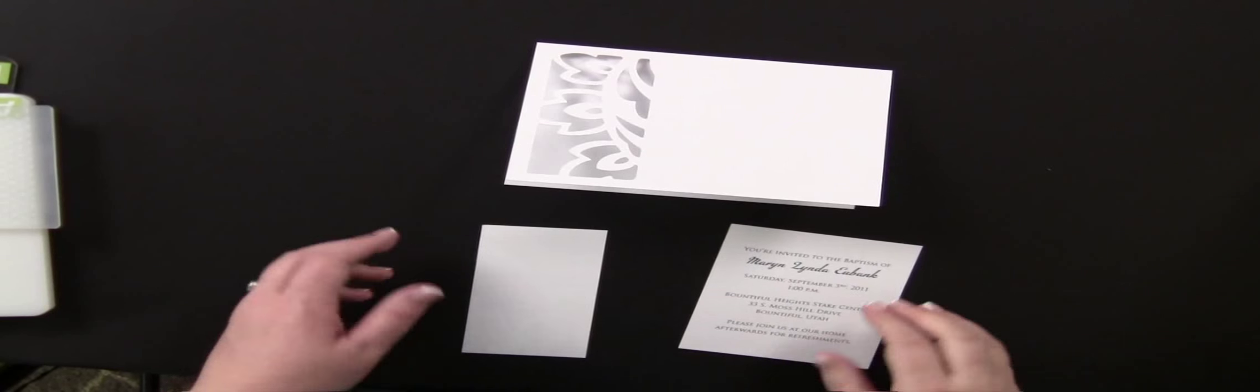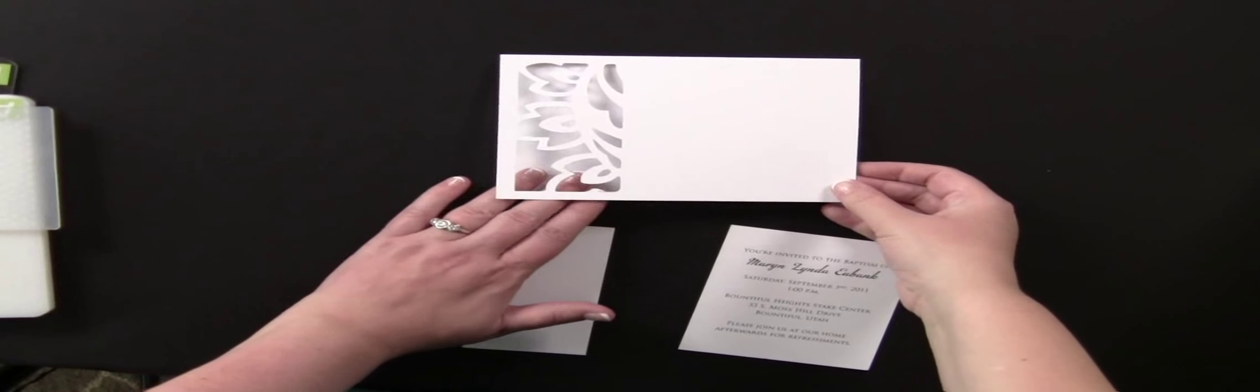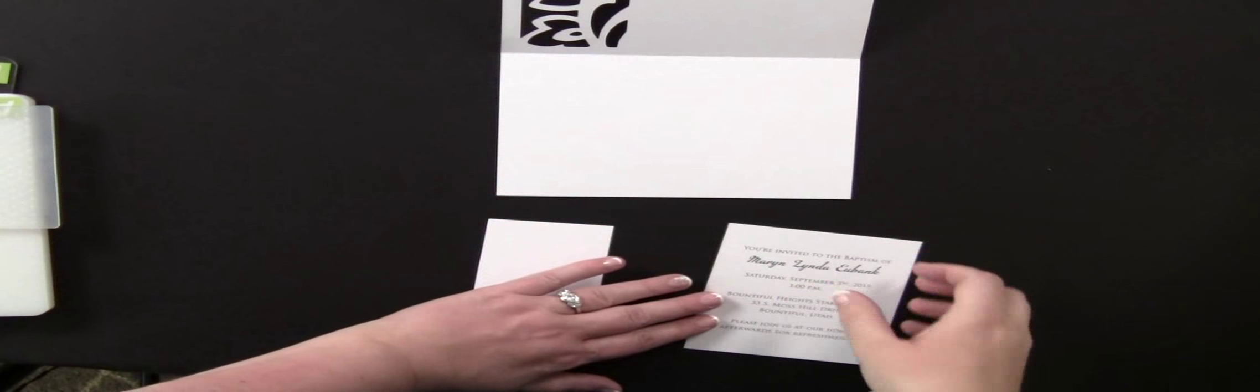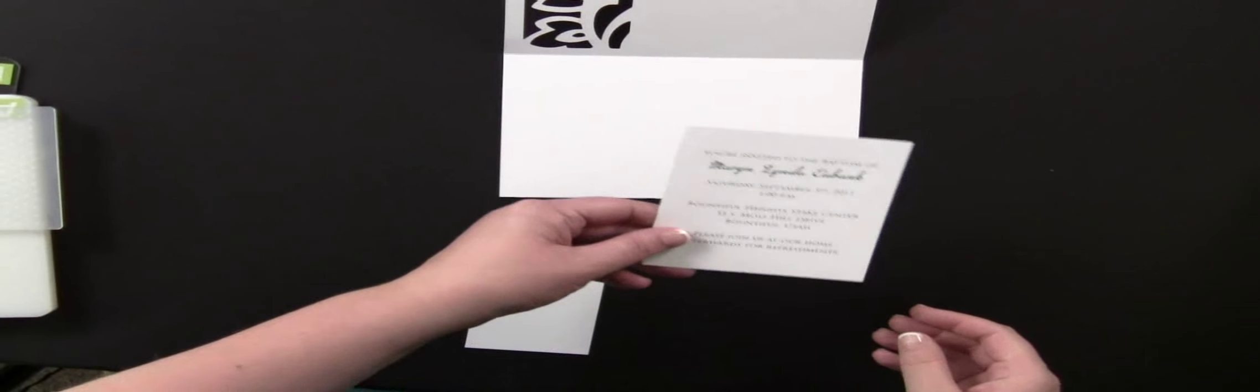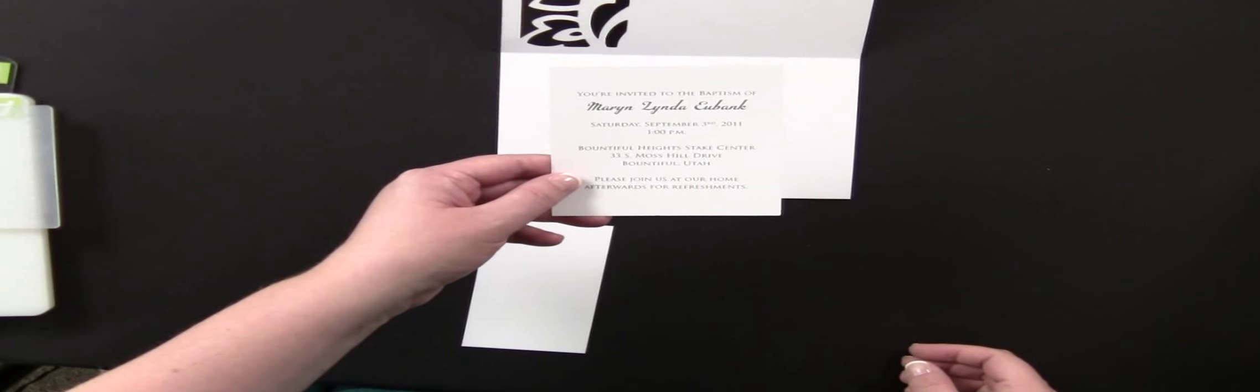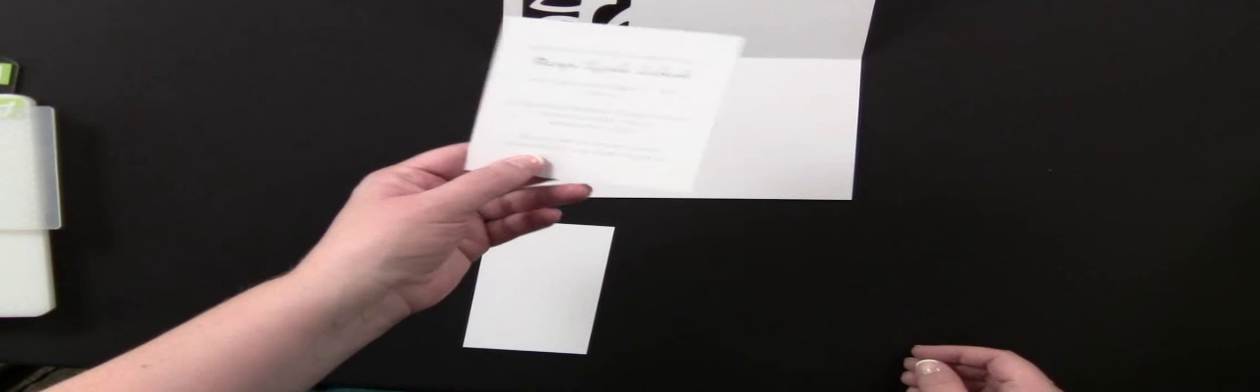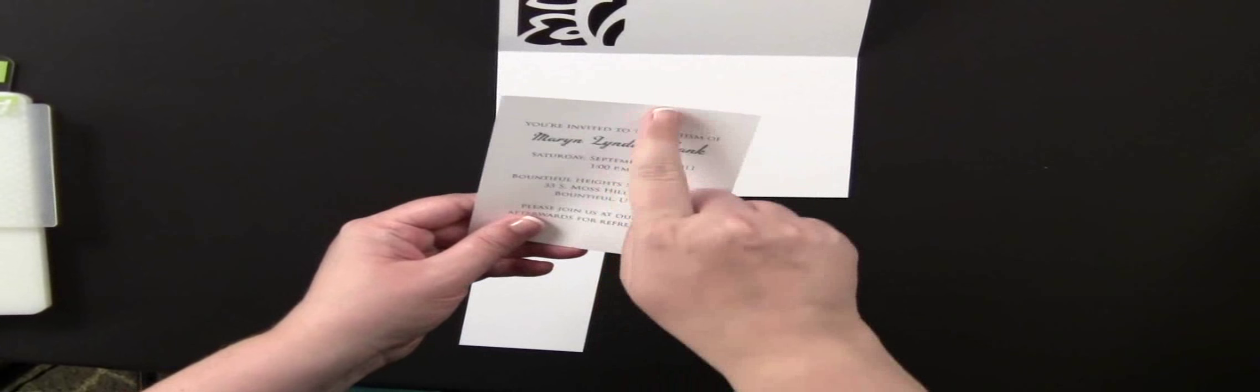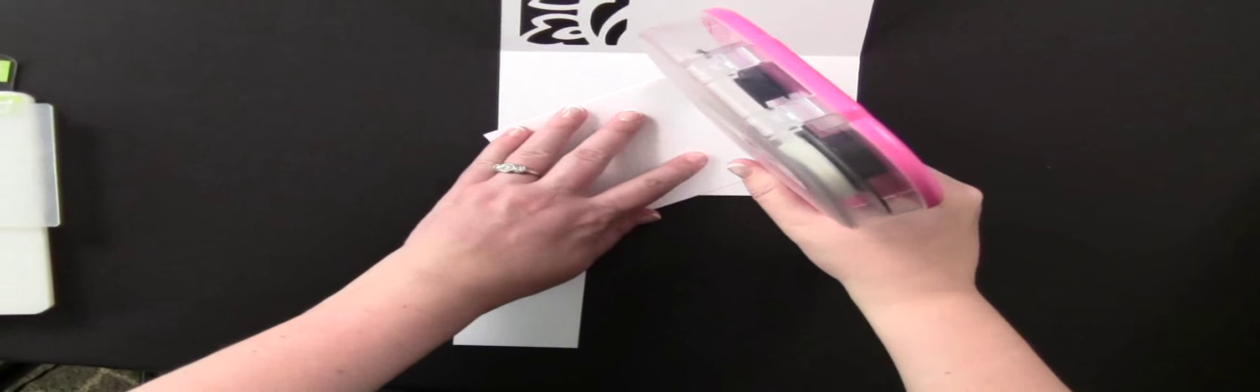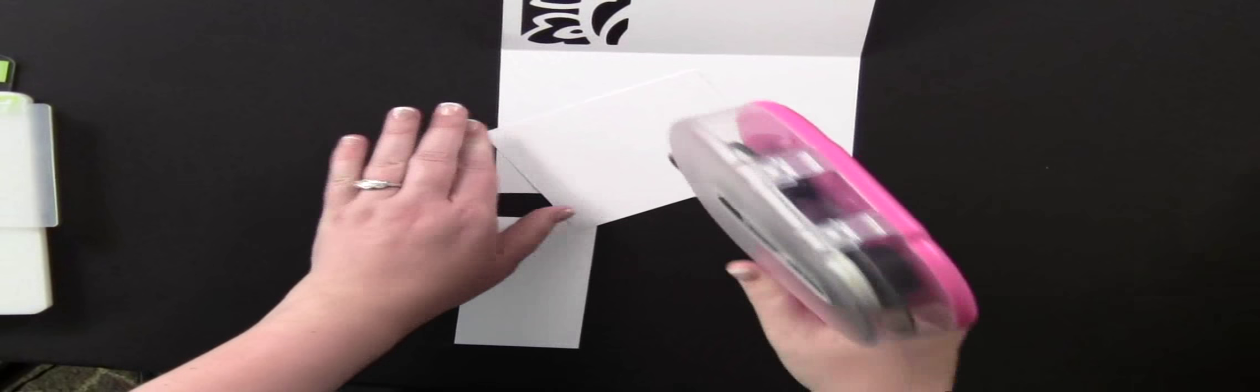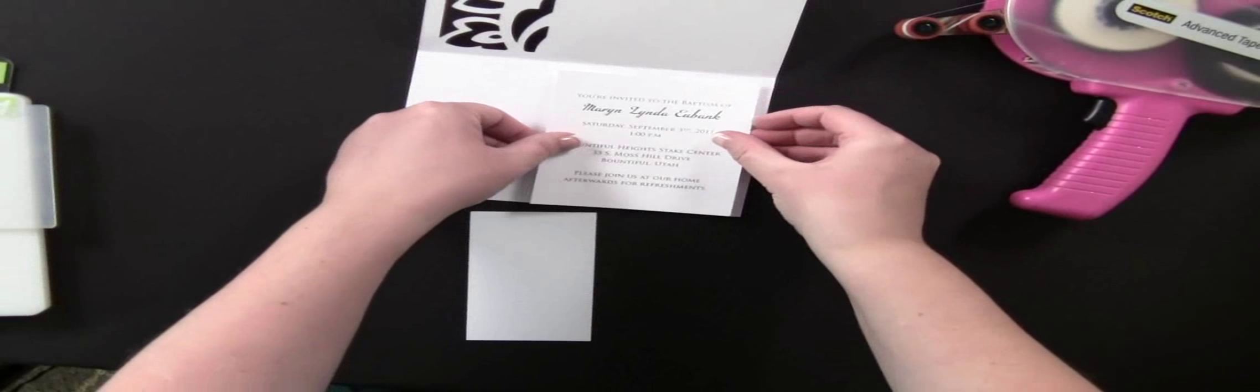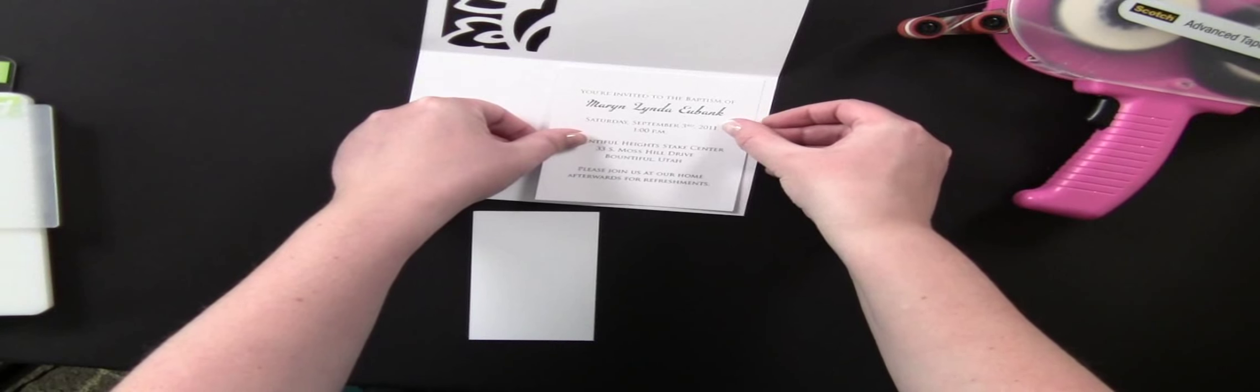Okay, I have folded my card base in half, and the first thing we're going to do is create the inside of our announcement or invitation. So what I've done is I printed off the invitation information on my color printer, and this piece of cardstock is 4 inches wide by 4.75 high. I'm not going to ink the edges, but I'm just going to use my tape runner adhesive to adhere this invitation information right here.